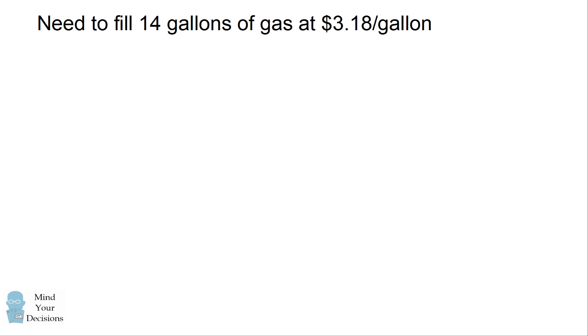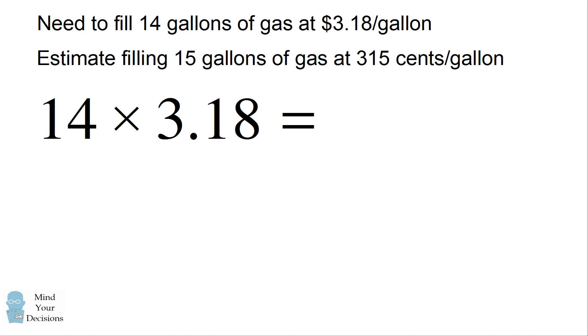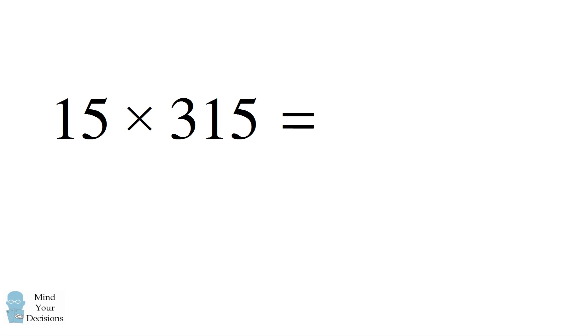So you can actually use this technique to solve other problems. Let's say you wanted to fill 14 gallons of gas at $3.18. That would be the problem 14 times 3.18. Now you can't use the technique because neither of these numbers end in 5. But you can estimate by considering a related problem. What if you wanted to fill 15 gallons at 315 cents per gallon. That would be the problem of 15 times 315. So now both of these numbers end in the digit 5. So we can use the technique that we just learned in this video.